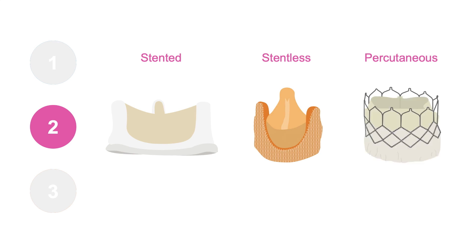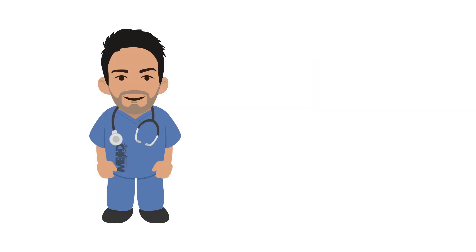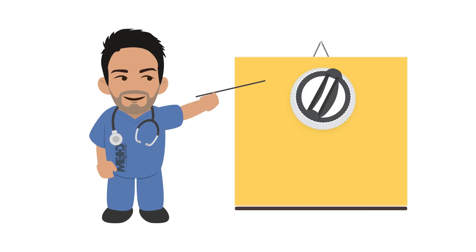Percutaneous valves are made of bovine pericardium mounted in an expandable stent. The last group includes homographs and autographs. Homographs are cryopreserved human aortic roots and valves, whereas autographs are harvested from the patient's own body. Currently, the most widely used prostheses are mechanical, stented bioprosthetic and percutaneous valves. So, this masterclass will mainly focus on these three.